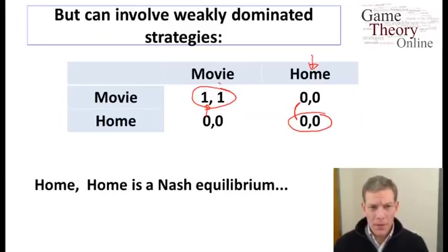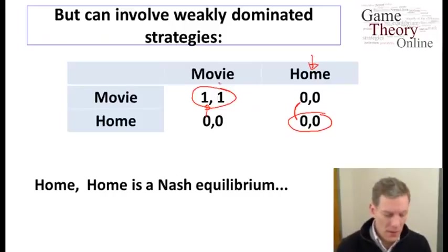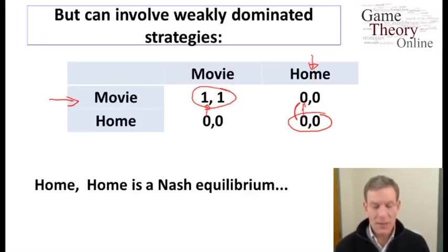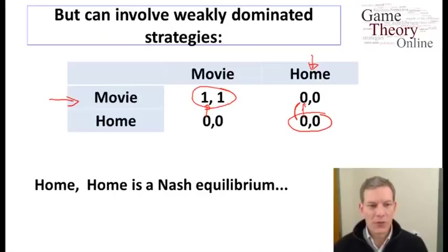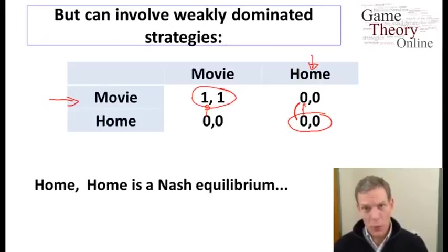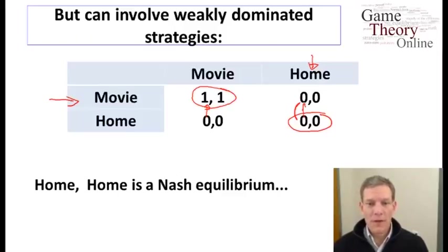We have two different equilibria. Going to the movies is actually a weakly dominant strategy — it weakly dominates staying home by giving at least as high a payoff and sometimes a higher payoff. So in some sense we might say the logical solution of this game is both going to the movies, but that's not solely picked out by Nash equilibria. Both combinations are Nash equilibria, and we'll have to invoke some additional reasoning in order to predict that people would go to the movies in this case.